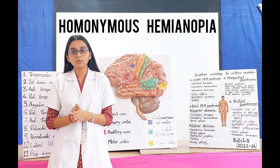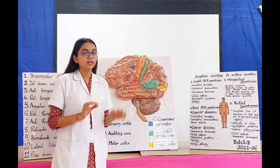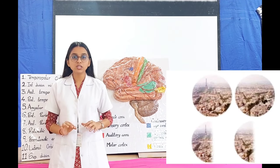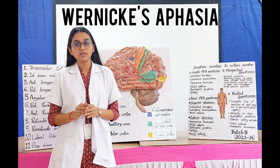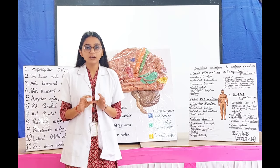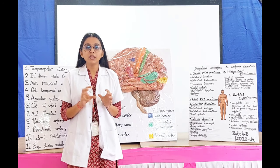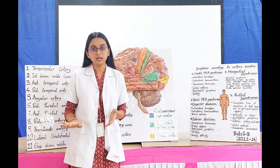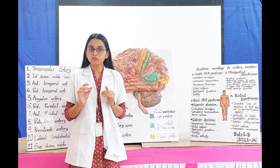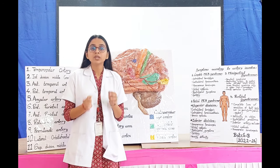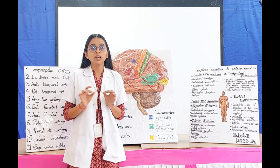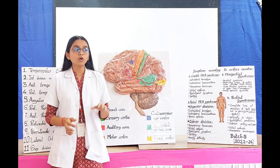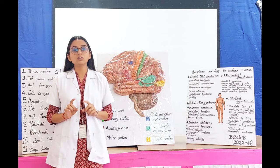Next is homonymous hemianopia — due to involvement of the visual cortex, there is loss of vision in half the visual field on the same side, meaning the person cannot see half of the visual field. Next is Wernicke's aphasia. Aphasia means inability to speak. Wernicke's aphasia means comprehension of language is difficult — the person cannot understand a question and gives answers without any understanding, though their speech is fluent and grammatically perfect. Wernicke's aphasia is also known as global aphasia and is seen when the dominant hemisphere is affected, because Wernicke's area is present only in the dominant hemisphere.